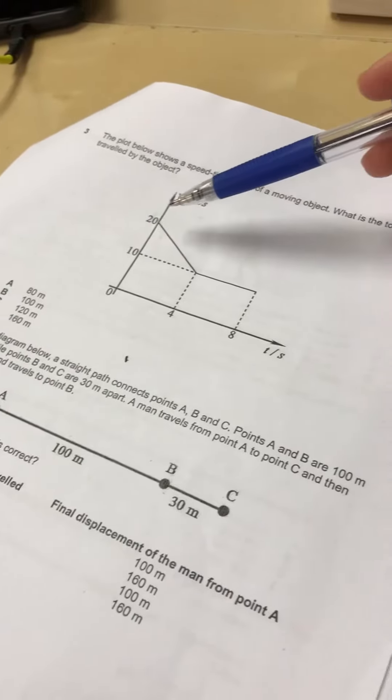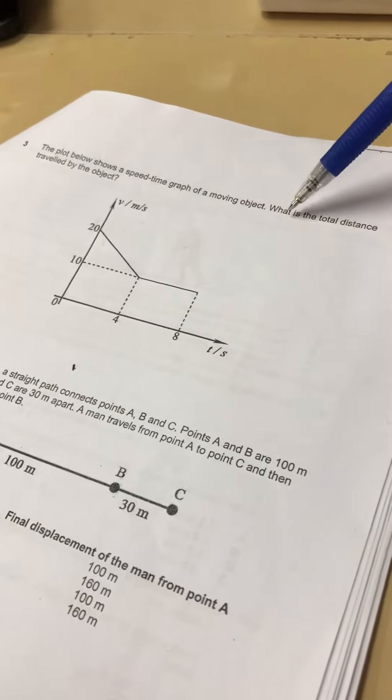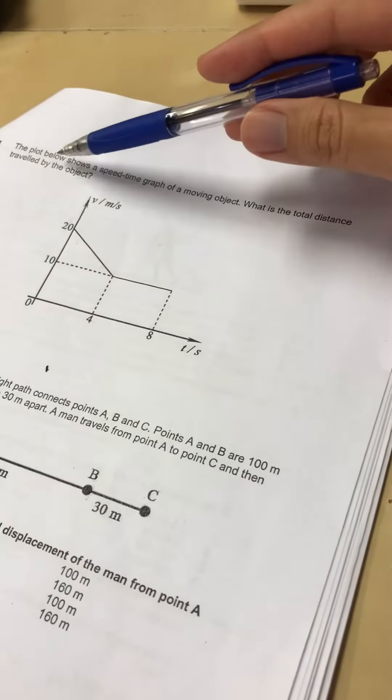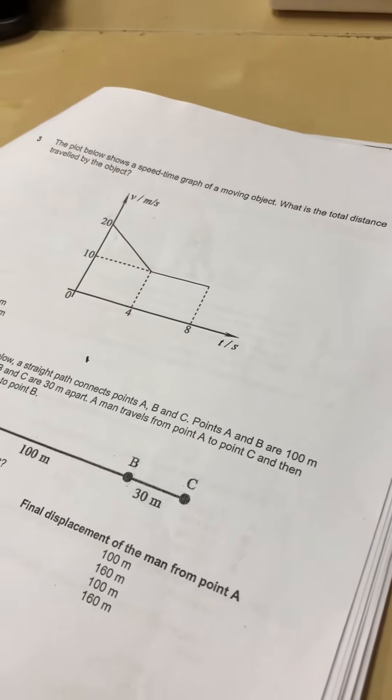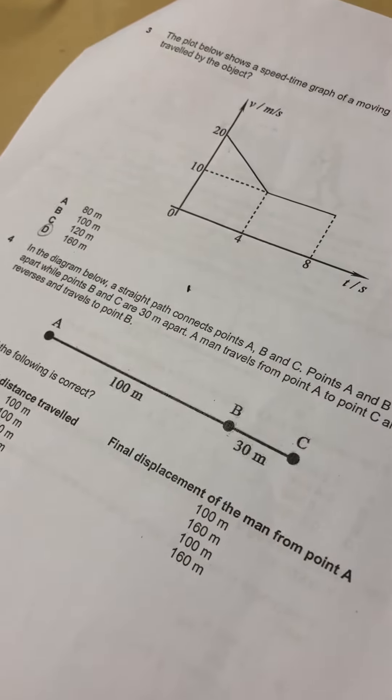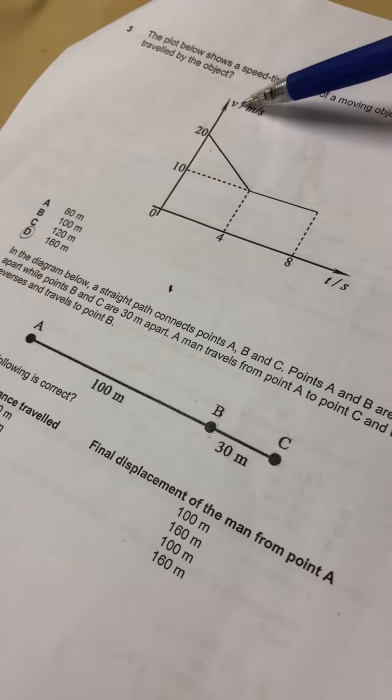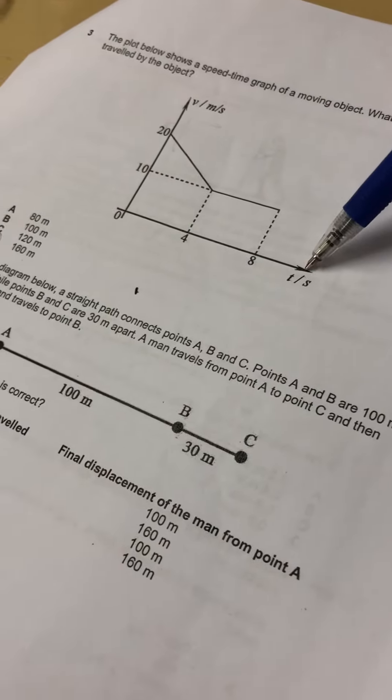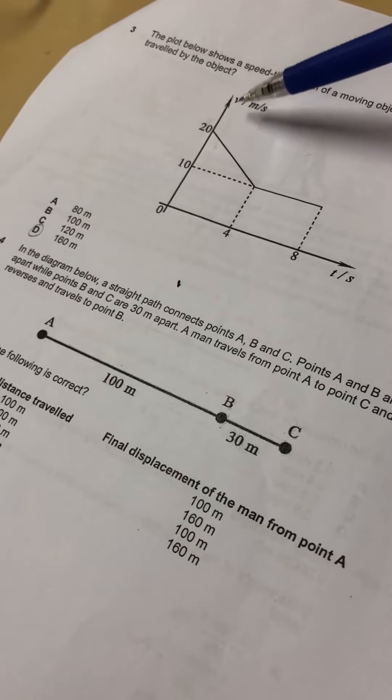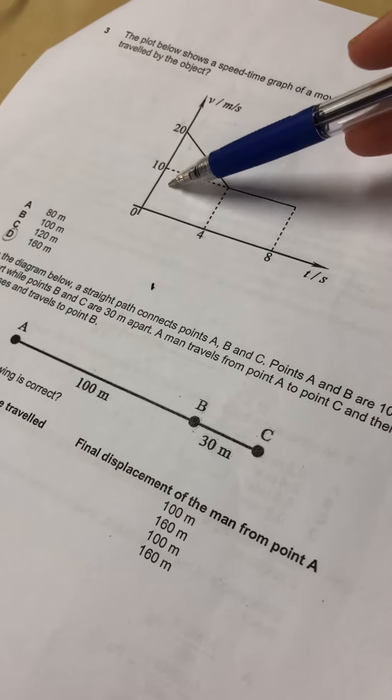Alright, so in this question, how do I find the distance? Because you're supposed to find the total distance traveled by the object. You take the idea of velocity times the time. Velocity times the time. Now you end up with distance, so actually what you do is you find the area.